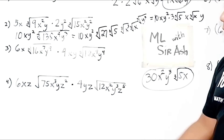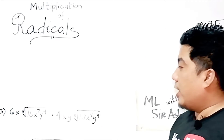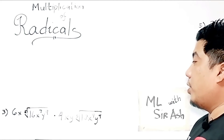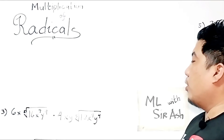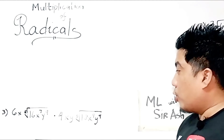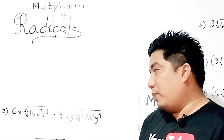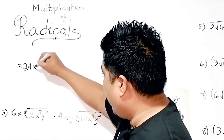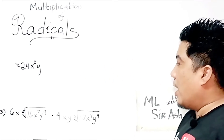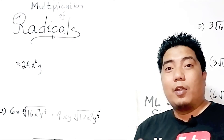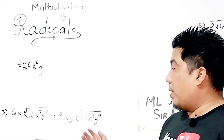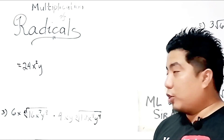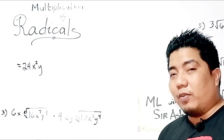Now let us go to our third example. We have 6x times the 5th root of 16x⁷y⁹, multiplied by 4xy times the 5th root of 18x⁴y⁴. How do we multiply this? First, multiply the coefficients: 6x times 4xy gives 24x²y. Now for the radicands — there is another approach, especially when you have a bigger index: you can simplify each set of radicands before multiplying them together.